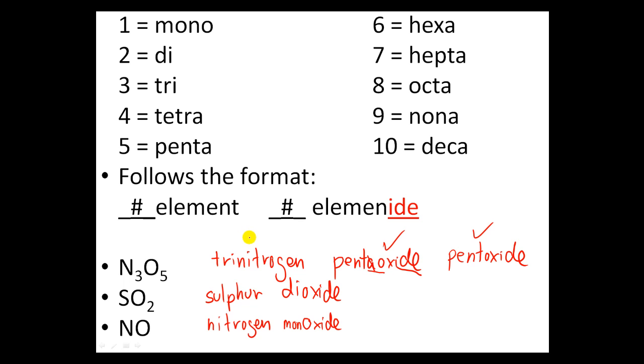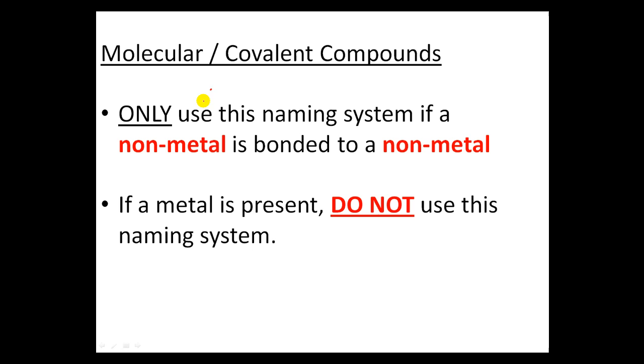So this naming system is very easy to do, and that's why it is the one most students make a mistake on. The reason behind that was, again like I said before, you can only use this naming system if it's two non-metals, and that's it. You cannot use this naming system if there is a metal involved. As soon as you see a metal involved, cannot use this naming system.